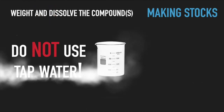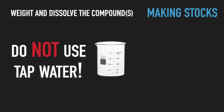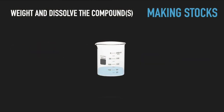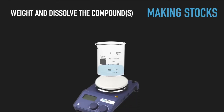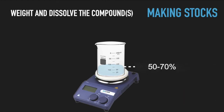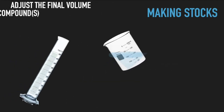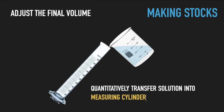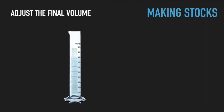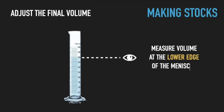To dissolve the compounds, always use chemically pure solvents only — never use tap water. Dissolve the compounds in a glass or plastic beaker of suitable volume. If needed, gently stir or heat up the solution using magnetic stir bars and water-free hot plates. Avoid foaming. Add diluent only up to 50–70% of the final volume. After complete solubilization and adjusting the pH, bring stock solutions to the final volume using a measuring cylinder or other well-calibrated vessels. For aqueous solutions, measure volume at the lower edge of the meniscus.